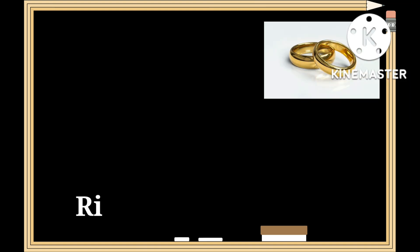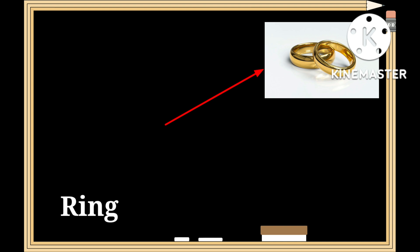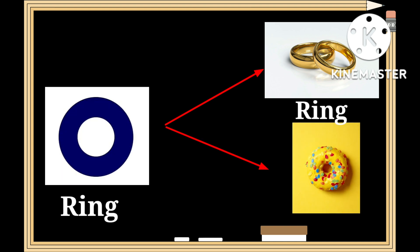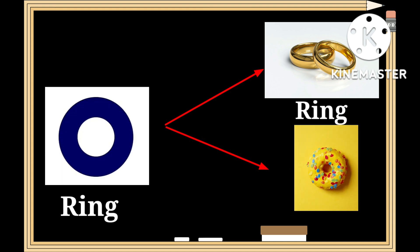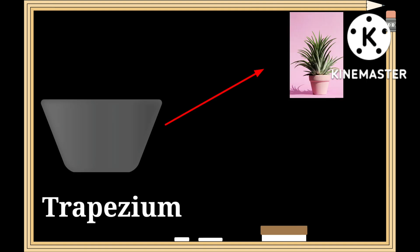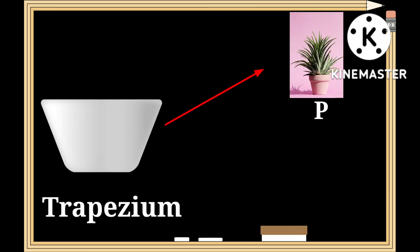This is a shape of a ring — r-i-n-g. As we can see, a ring and a donut have a similar shape to that of a ring.